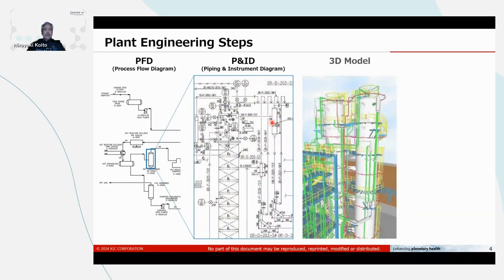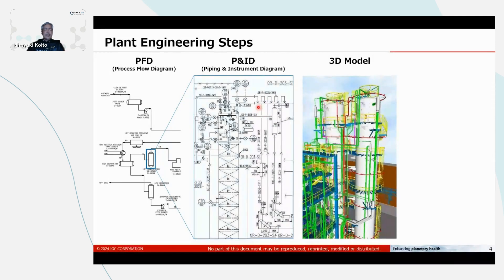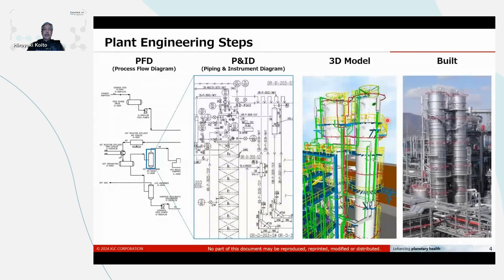After that, based on this, we develop a 3D model. This is a spatial design, but we still, based on this P&ID, cannot change the relationship of the P&ID regarding this spatial design. After that, we purchase material, and fabricate, and build the plant. That is the overall workflow.